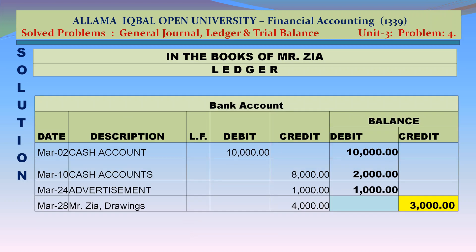Bank account: debit — cash account March 2 Rs 10,000. Credit — cash account March 10 Rs 8,000; advertisement March 24 Rs 1,000; Mr. Jia drawings March 28 Rs 4,000. Closing balance: Rs 3,000 credit.